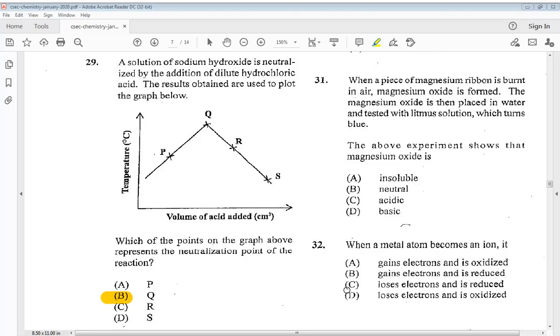Question 31. When a piece of magnesium ribbon is burnt in air, magnesium oxide is formed. The magnesium oxide is then placed in water and tested with litmus solution which turns blue. The above experiment shows that magnesium oxide is A insoluble, B neutral, C acidic, or D basic. So we know the answer is D basic.